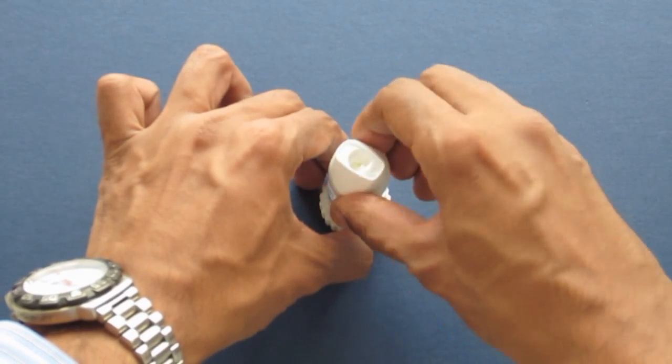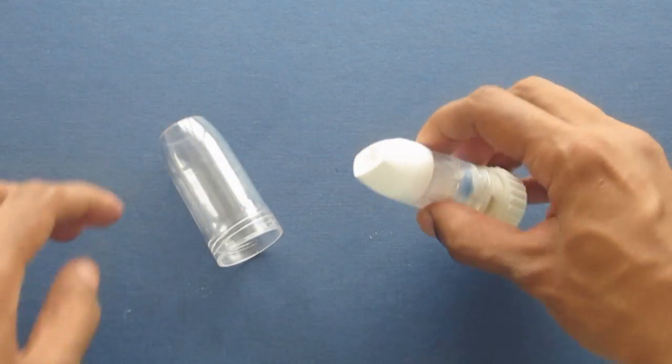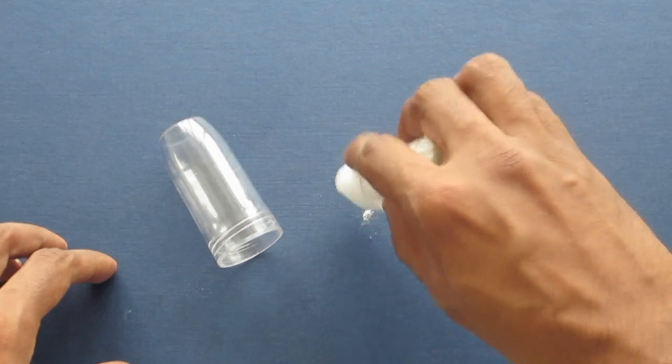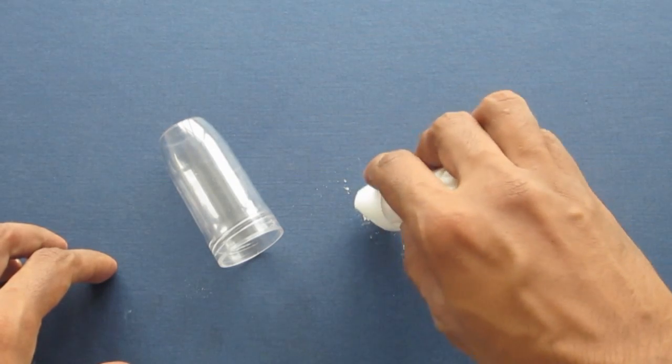Turbohaler adalah sama seperti Accuhaler. Ia mengandungi ubat di dalam bentuk serbuk. Anda perlu tarik nafas yang dalam untuk mengeluarkan ubat tersebut.